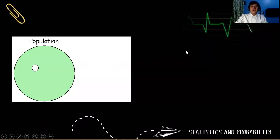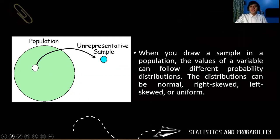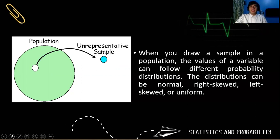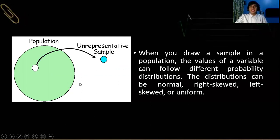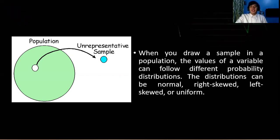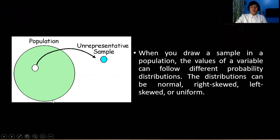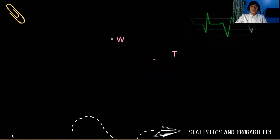Remember week number five, when we draw samples from the population, what might happen? So these are the possible results. The values of the variable could take different probability distributions. It could be normal, just like what we have discussed in your weeks three to four, with large frequency in the center and extremely decreasing frequency on the tails of the distribution. But when you perform sampling techniques, you can also have right-skewed distribution, a left-skewed distribution, or a uniform distribution.